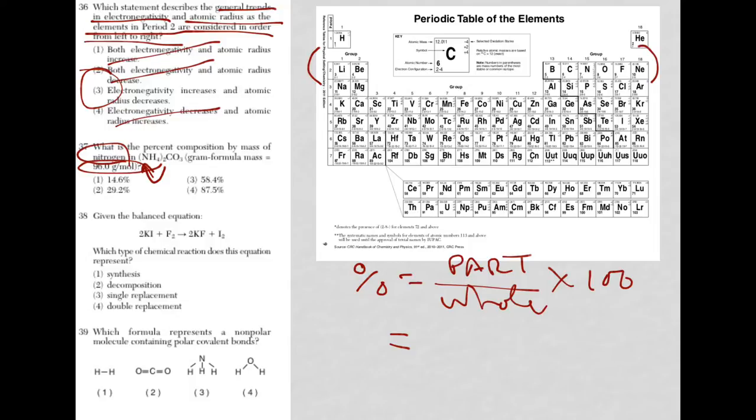The only tricky part here is you have to account for nitrogen twice. Because NH4 and then there's the parentheses 2, that 2 gets distributed. So I go to nitrogen. Nitrogen's mass is 14, but I have 2 of them. So it's going to be 28 over that gram formula mass with 96. They were nice enough to calculate it for us. But don't forget times 100. And when you plug it in your calculator, you're going to get 29.2% as your answer.